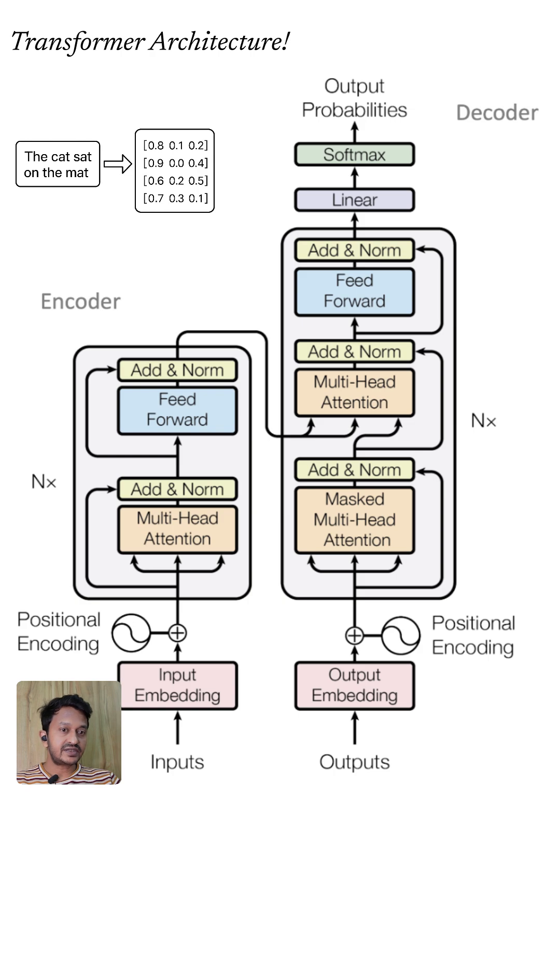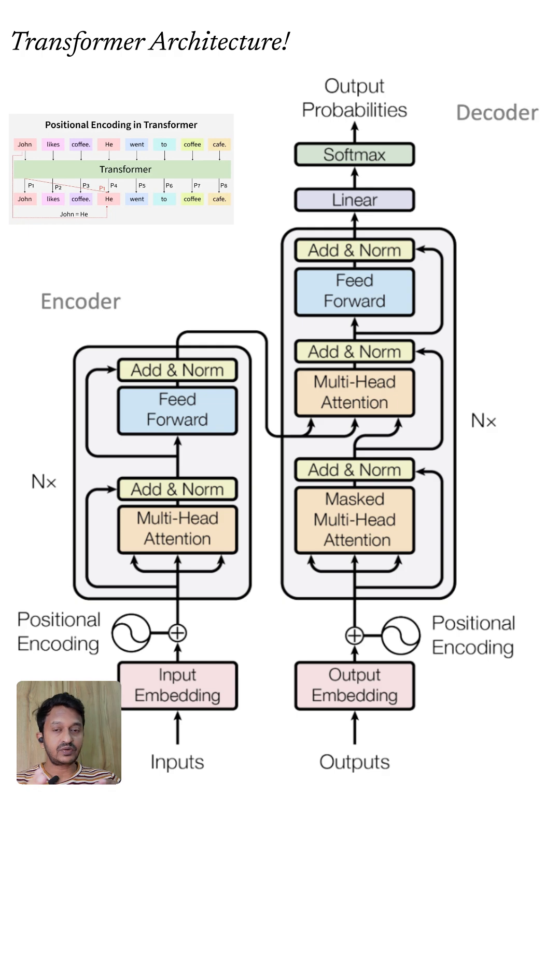These vectors represent meaning, and then we see positional encoding. Transformers don't process text in order like RNNs, like we saw in recurrent neural networks. We need to add information about word positions. Positional embeddings are added to capture the order of the tokens, where the word comes, the sequence of the order.